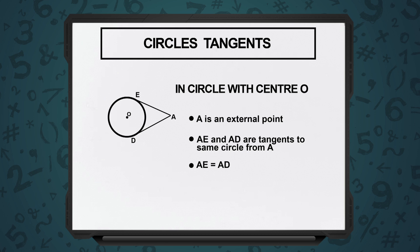It does not matter whether the point is here or there. You would have one tangent on one side, one tangent on the other side. One will touch the circle at one end, the other tangent will touch the circle at the other end. These two lengths will always be equal. You have to remember that. Tangent makes a right angle with the radius segment where it just touches the circumference of the circle, and tangents drawn from the same external point to the same circle will always be equal in length.